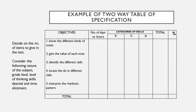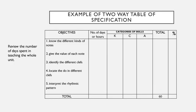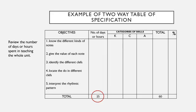We have to decide first on the number of items to give in the test. We consider the nature of subject, the grade level, level of thinking skills desired, and the time allotment. So for this example, we have a 60-item test. Then we review the number of days or hours spent in teaching the whole unit. For this example, we have 15.